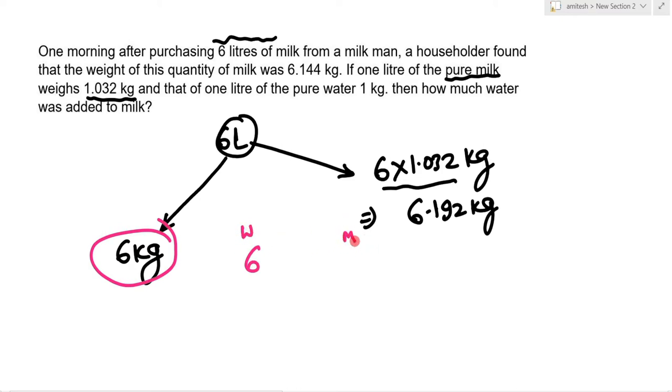Pure milk is 6.192 kg, and the combination weight is 6.144 kg. Here is pure water. The difference is 0.048, and this difference is 0.048.